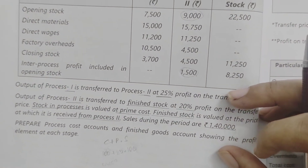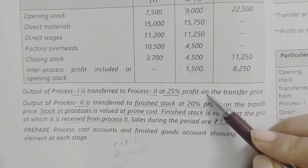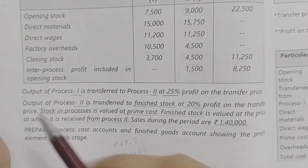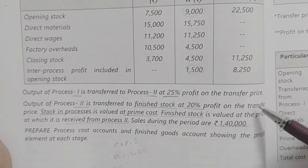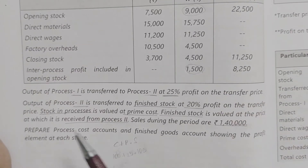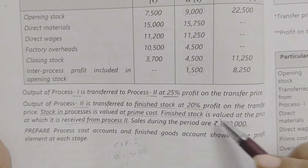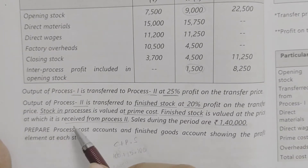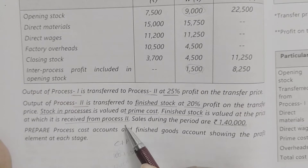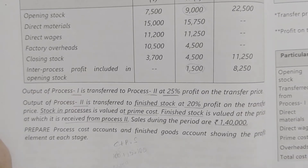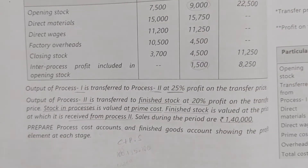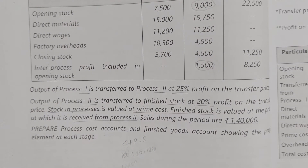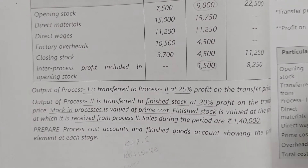Output of Process 1 is transferred to Process 2 at 25% profit on transfer price. Output of Process 2 is transferred to finished stock at 20% profit on transfer price. Stock in processes is valued at prime cost. Finished stock is valued at the price at which it is received from Process 2. Sales during the period are 1,40,000. We prepare process cost accounts and finished goods account showing the profit element at each stage.